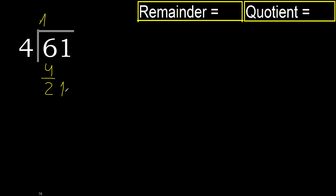Next, bring down to get 21. 4 multiplied by 5 is 20. 20 is not greater than 21. 21 minus 20 is 1.